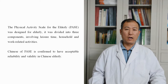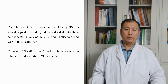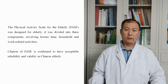The Physical Activity Scale for the Elderly (PASE) was designed for elderly populations. It is divided into three components involving leisure time, household, and work-related activities, which are relevant to patients with COPD. The PASE has been validated and shown to be reliable in studies of elderly populations and patients with end-stage renal disease and knee pain.